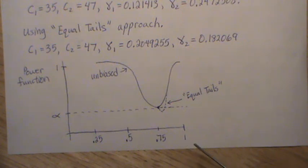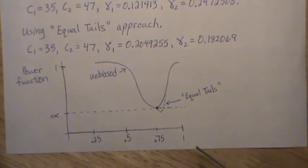But the equal tails is so much easier to find the rejection region. Okay, well, that's all I have for this video. Hopefully you enjoyed that. I sure did. Please like the video and subscribe so you don't miss the next one. Thanks. Bye.